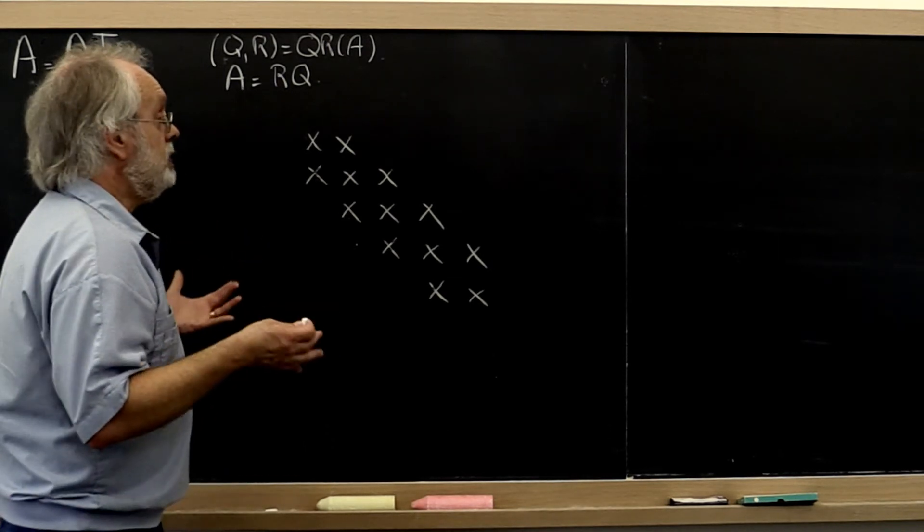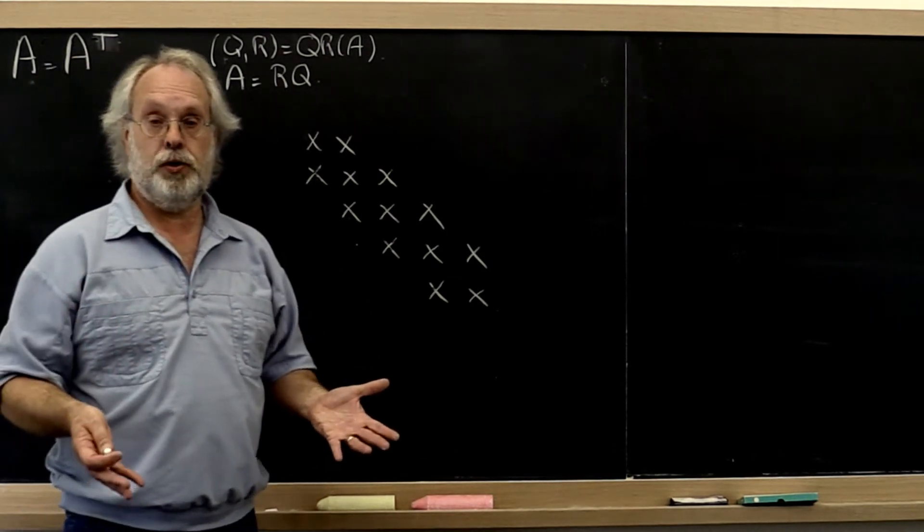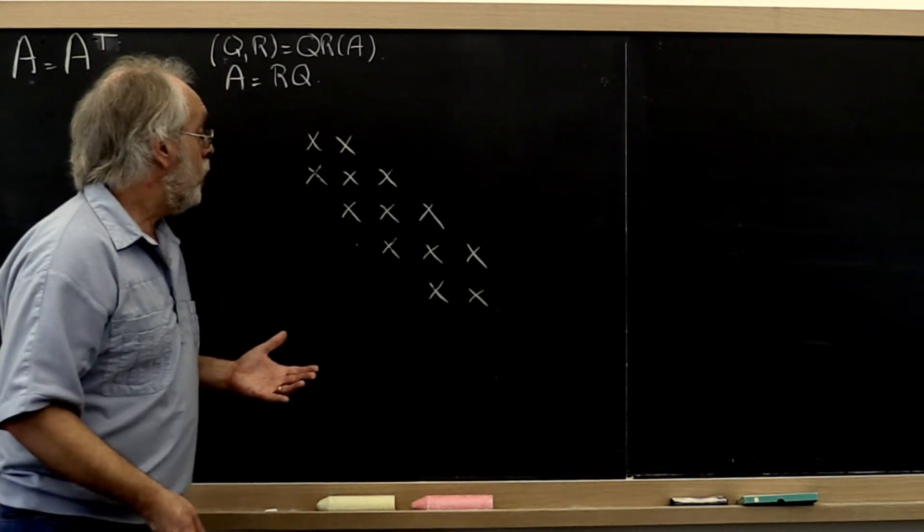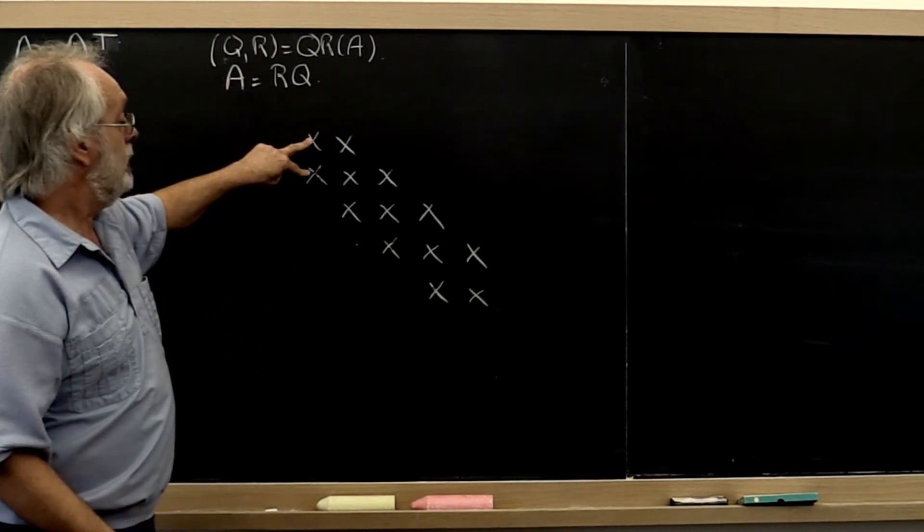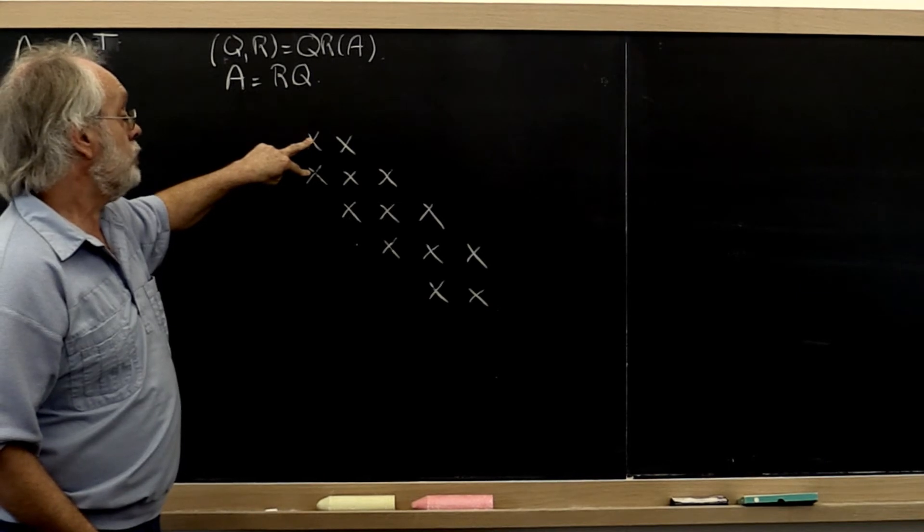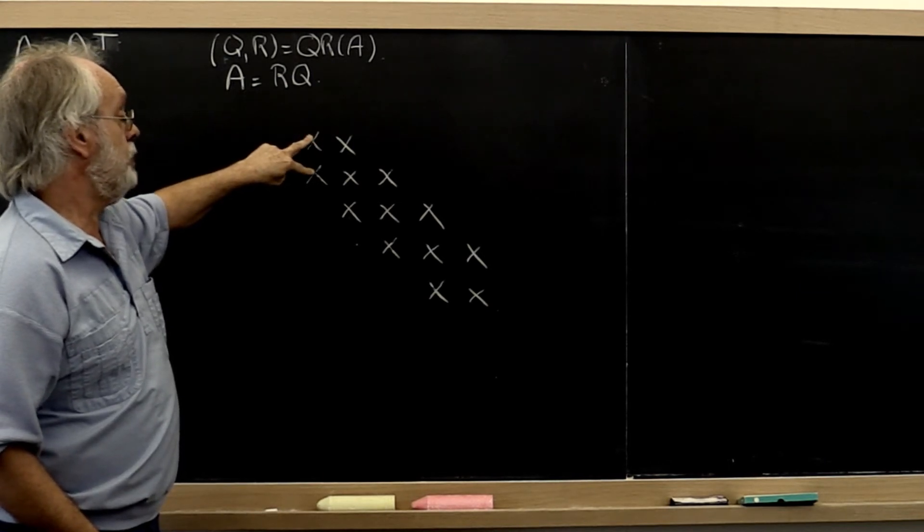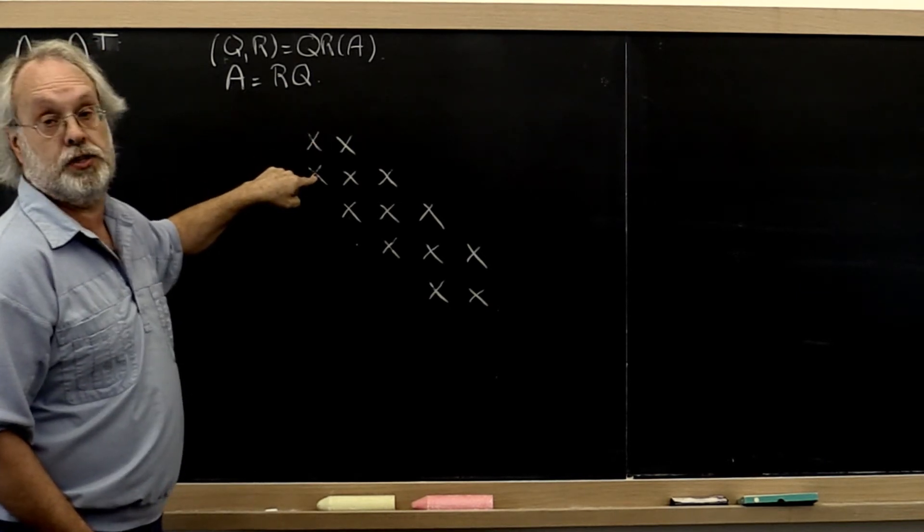Now what kind of unitary matrices are at our disposal? We can compute a householder transformation just off of these two entries, thereby introducing a zero.